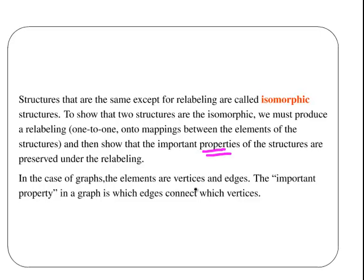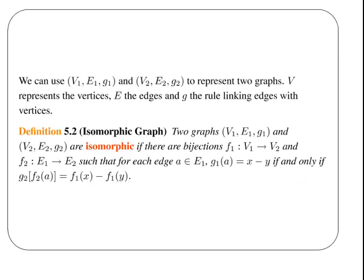In cases of graphs, the elements are edges and vertices. The important property in a graph is which edges connect to which vertices. And again, you can extend that to cycles and paths and stuff like that. We can use the notation to represent two different graphs. V1, E1, G1, and V2, E2, G2, to represent two graphs. The V represents the vertices, the set of vertices. E represents the edges. And G represents the rule linking edges with vertices.